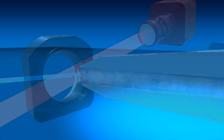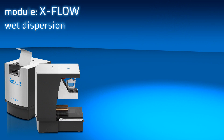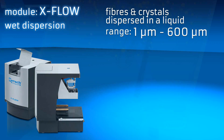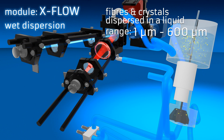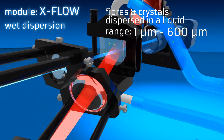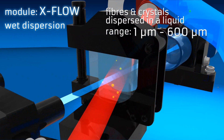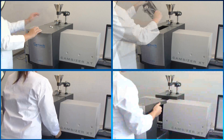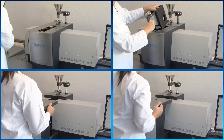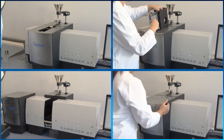With the X-Flow Module, the CamSizer XT offers the possibility of wet dispersion of particles in a range from 1 to 600 micrometers. Sample materials like fibers or crystals are dispersed in a liquid and circulate through the measurement system. Thanks to the exchange system of the CamSizer XT, the three dispersion units can be exchanged quickly, safely, and without effort.